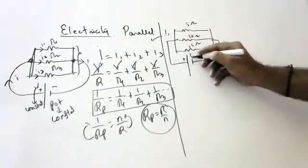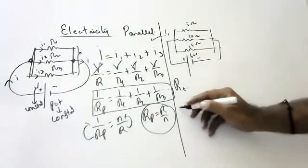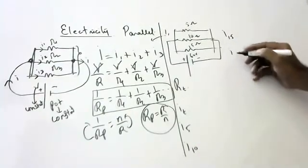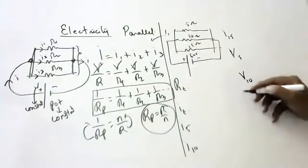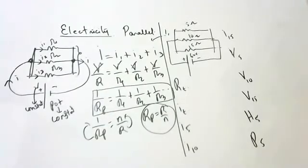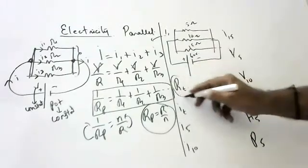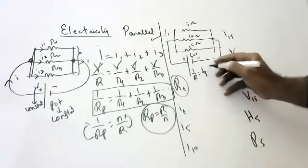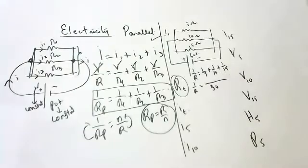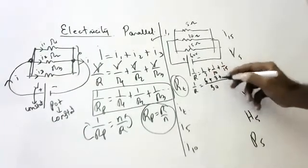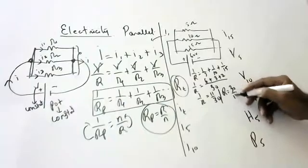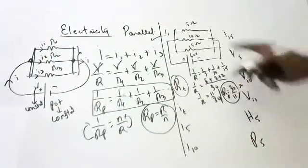Now a numerical: resistors of 5 ohms, 10 ohms, and 15 ohms are connected in parallel with a battery of 60 volts. To find total resistance: 1/R = 1/5 + 1/10 + 1/15. The LCM is 30. So 1/R = 6/30 + 3/30 + 2/30 = 11/30. Therefore total resistance R = 30/11 ohms.